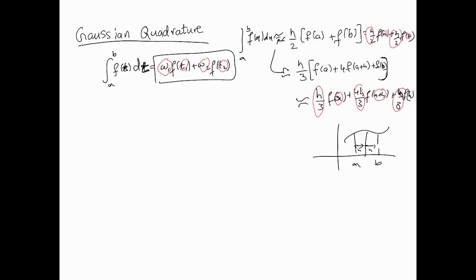We're going to find w1, w2, t1, t2 such that the integral is exact for certain polynomials, just as we fit polynomials in the other cases. The first thing I'll do is limit the integral to between minus one and one: the integral from -1 to 1 of f(t) dt = w1·f(t1) + w2·f(t2). I'll look at f(t) approximating t⁰ all the way up to t³.